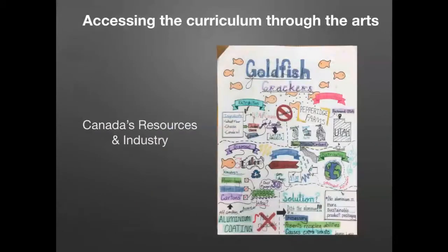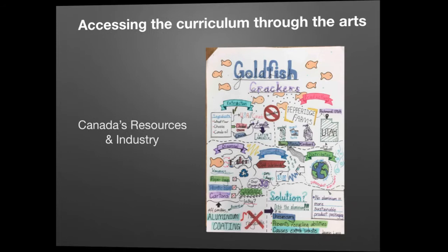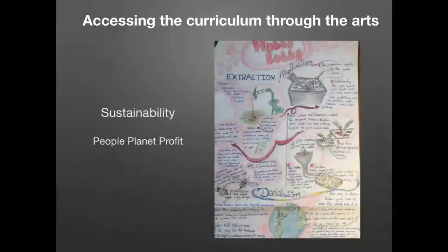When we talk about Canada's resources and industry, after focusing on Annie Leonard's Story of Stuff, students are challenged to pick any product and chart how it's made — how it affects us in terms of extraction and resources. This example is for Goldfish Crackers, and a similar one for Hubba Bubba Gum. We talk a lot about sustainability, and I use what I call the triple P model — people, planet, profit — as the guiding principle behind everything we study.